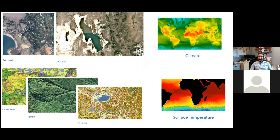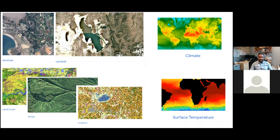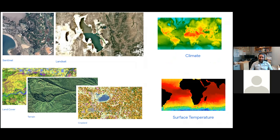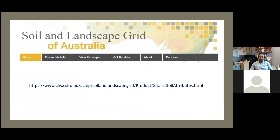When I say off-farm information, I'm referring to all these freely available data sets that are worldwide. In this particular case, we use a set of remote sensing imagery, some climate variables, some soil attributes, and some terrain attributes. The soil attributes were obtained from the Soil and Landscape Grid of Australia, which is a free service.